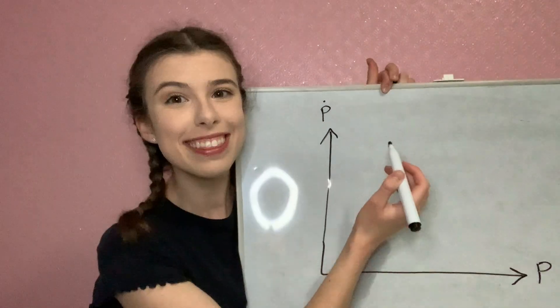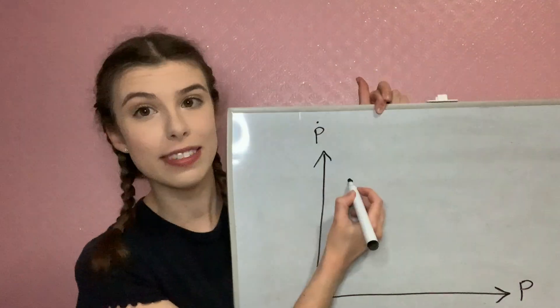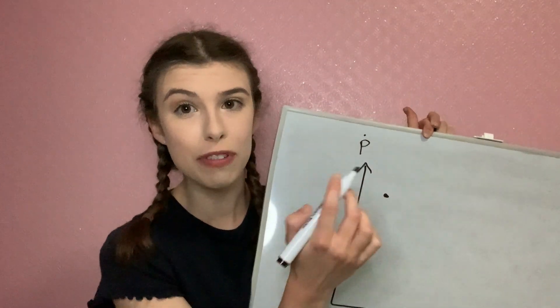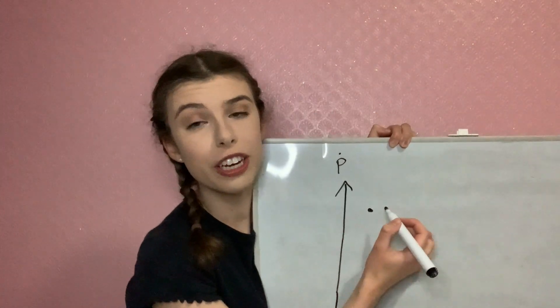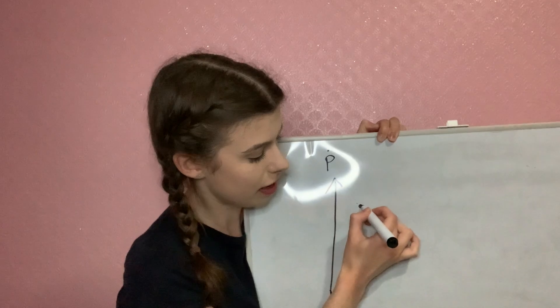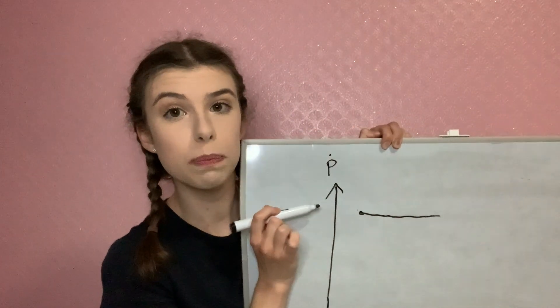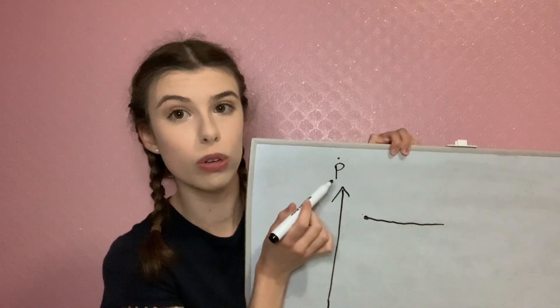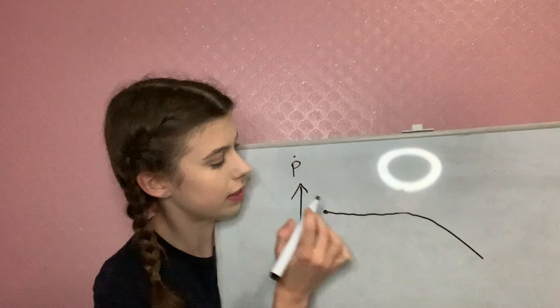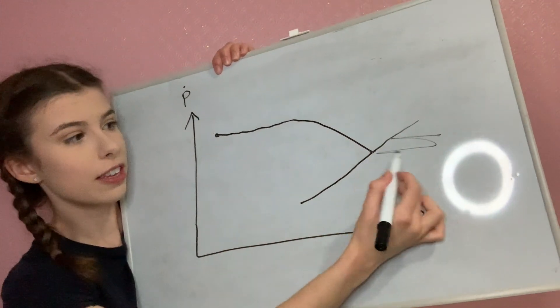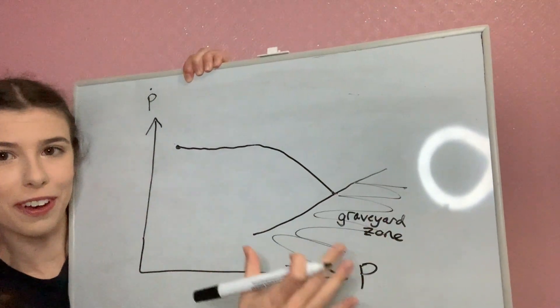Neutron stars are born with a very short period, meaning they're rotating very quickly because it takes a short time to complete one rotation. But as we said, their periods are going to increase in time, so their evolution on this graph looks like this: initially they have a constant spin-down rate, a constant P dot. However, eventually the spin-down rate decreases, so we see P dot decrease. Eventually we reach a point where the neutron star is rotating quite slowly, its magnetic field has weakened, and the pulses become too faint to detect. At this point we say it's entered the graveyard zone — pulsars in the graveyard zone are not detectable.